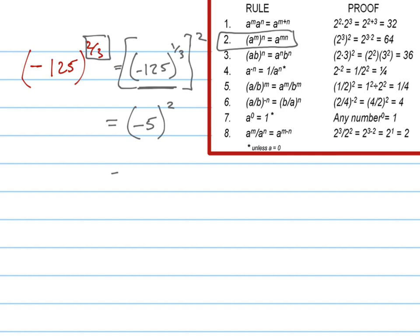And what's negative five squared? 25. So there's your answer. You could have done it a different way, but that's the easiest way to do it without a calculator.